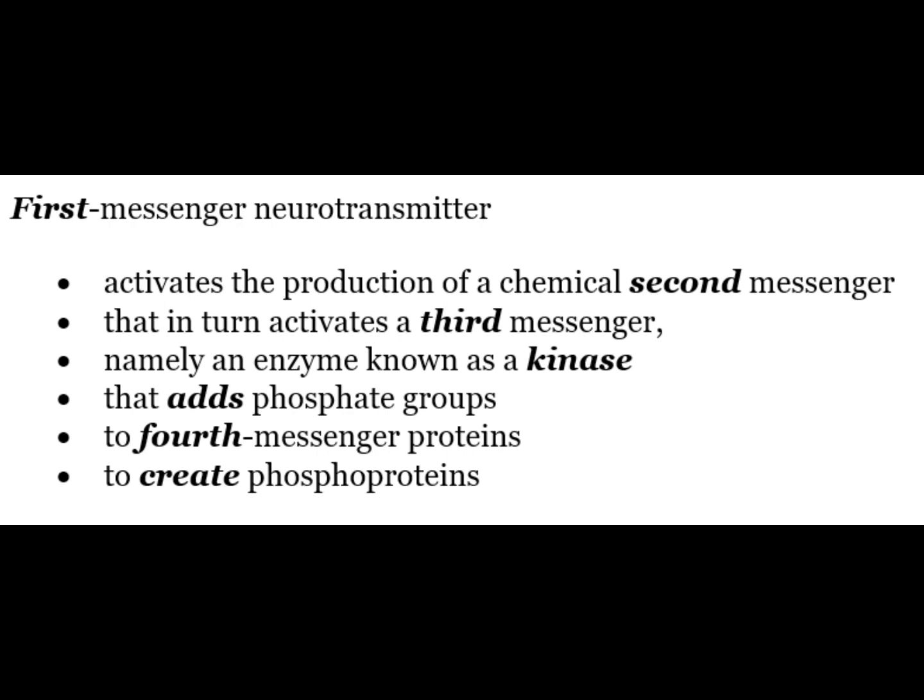The first messenger neurotransmitter activates the production of a chemical 2nd messenger, that in turn activates a 3rd messenger — namely an enzyme known as a kinase — that adds a phosphate group to a 4th messenger protein to create phosphoproteins.